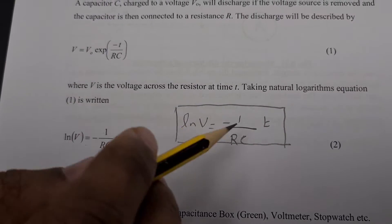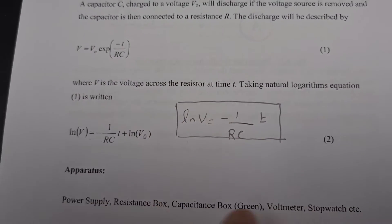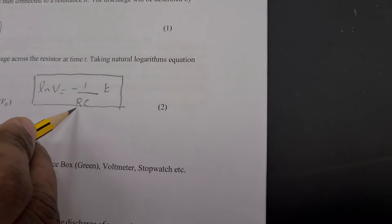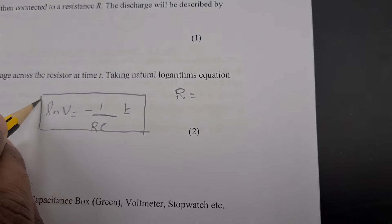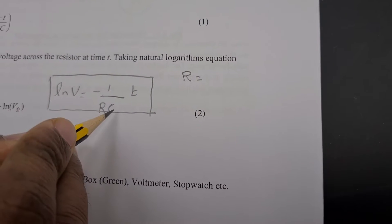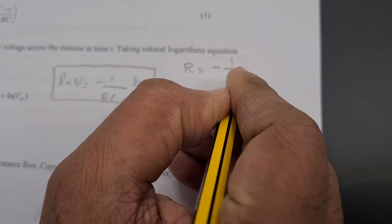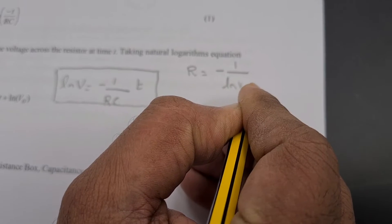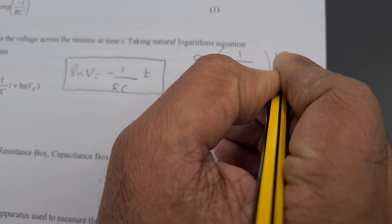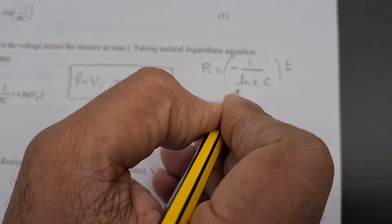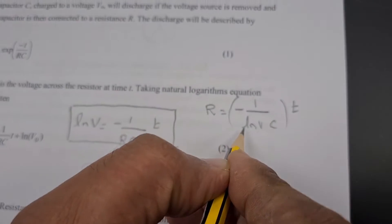In the exam paper, the equation will be given like this, and you have to rearrange it. We are going to find the resistance, so rearranging gives: R equals minus 1 divided by natural log of V, multiplied by C, multiplied by T. Here, T over natural log of V is obtained from the graph — it is nothing but 1 over the slope.